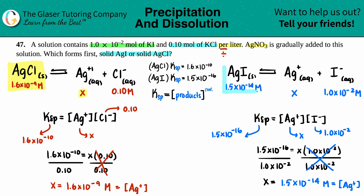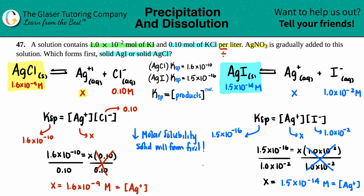From this information we can determine which precipitates first. The rule: the compound with the lower molar solubility will precipitate out first, because you reach that lower threshold before the higher one. Comparing: AgCl has molar solubility 1.6×10⁻⁹ M versus AgI at 1.5×10⁻¹⁴ M. 10⁻¹⁴ is a much smaller number than 10⁻⁹, so the lower molar solubility solid will form first.